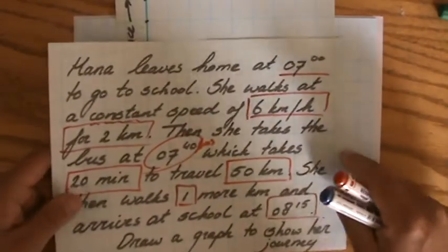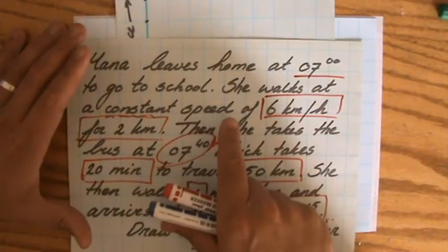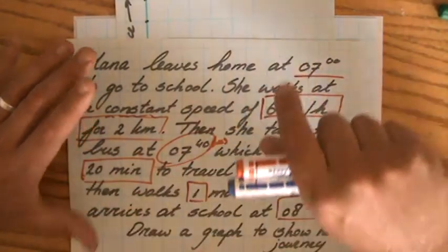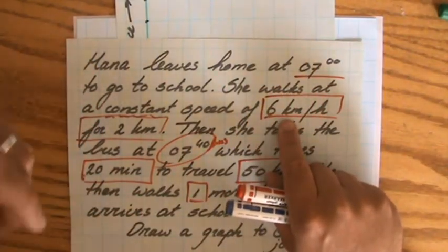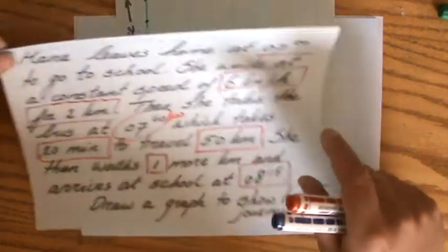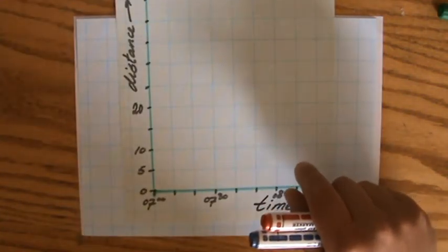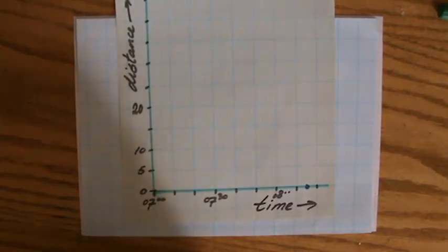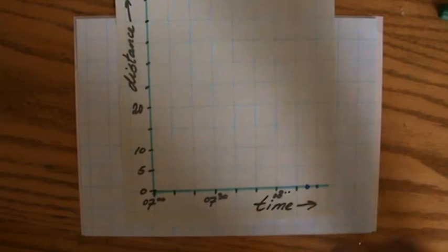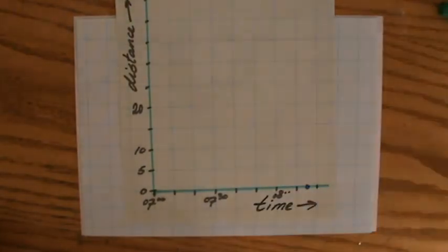She walks at a constant speed, so the line on the graph will be straight. That speed is six kilometers per hour for two kilometers. We need to ask: how long is that going to take her? You might want to calculate this on a separate piece of paper.